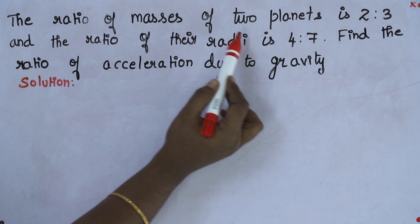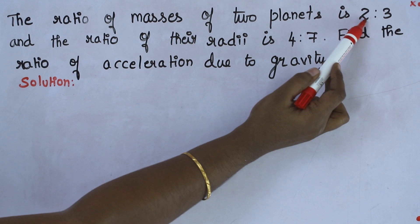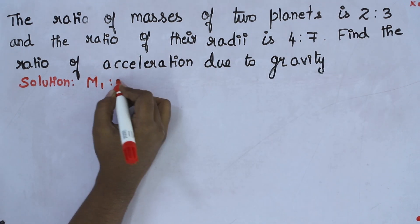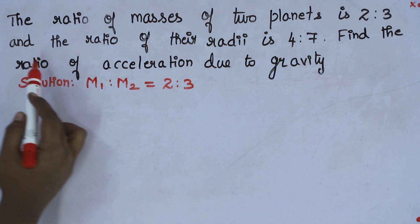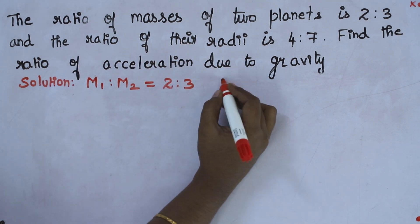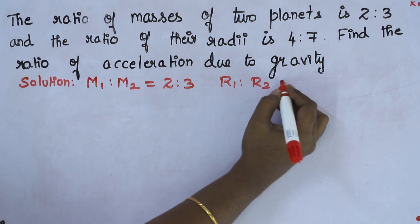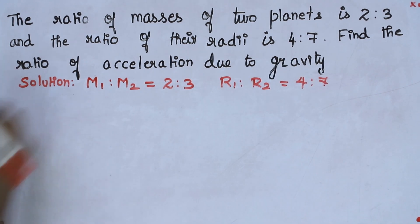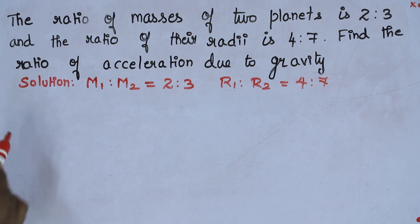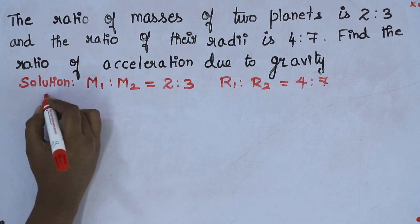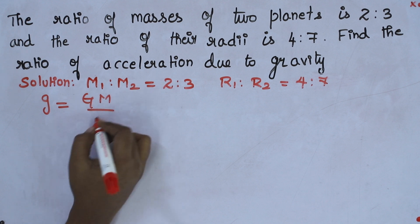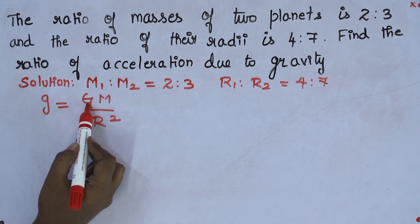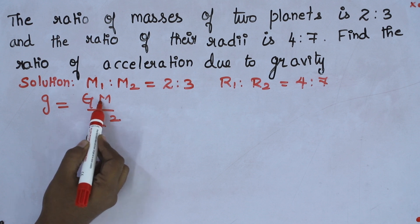Next problem: the ratio of masses of two planets is 2 is to 3, so M1 to M2 equals 2 to 3. The ratio of their radii: R1 to R2 equals 4 to 7. They are asking us to find the ratio of acceleration due to gravity. From the relationship between small g and capital G, we derived: g equals capital G times M divided by r square.